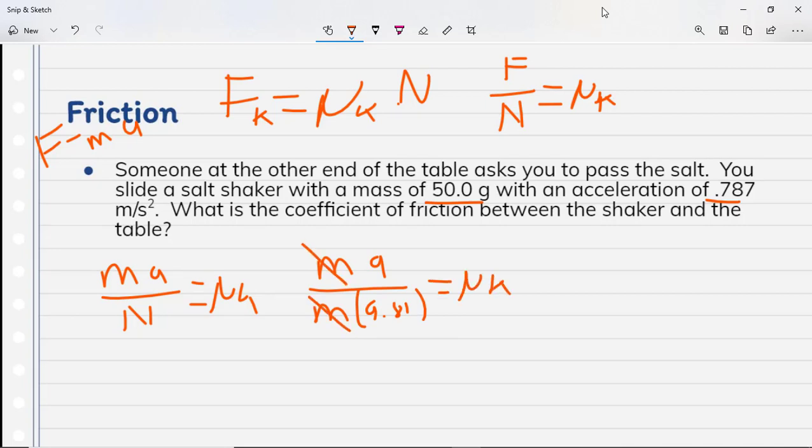Well, the mass of the object is the same, so that's going to cancel. So basically I'm just going to take the acceleration of the object divided by 9.81 and that gives me my coefficient of friction. I plug in and solve.